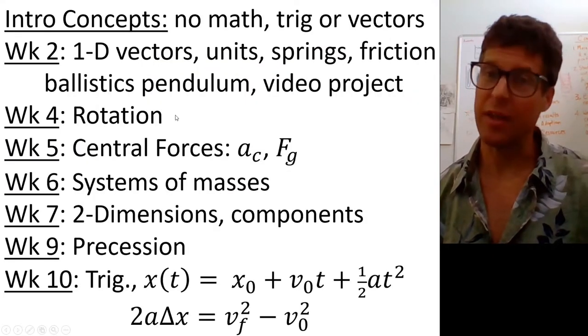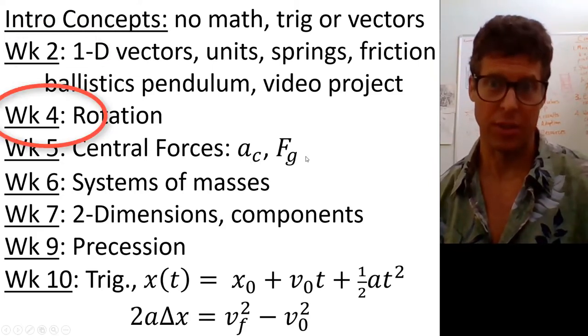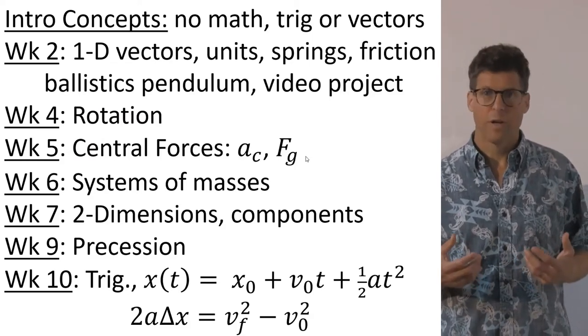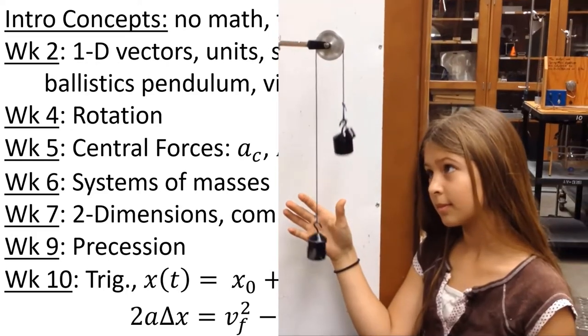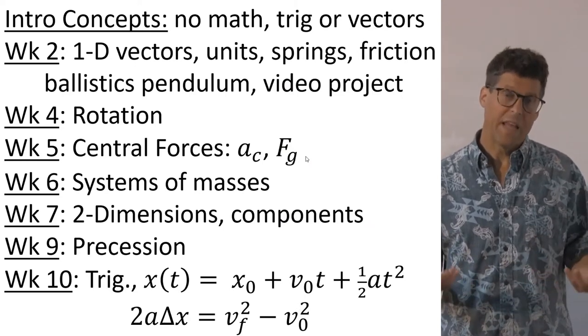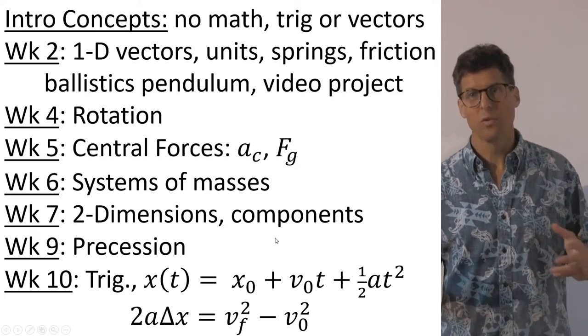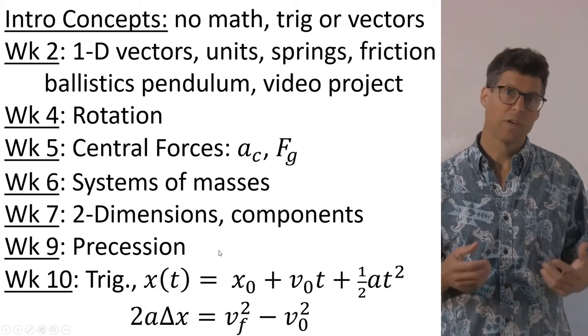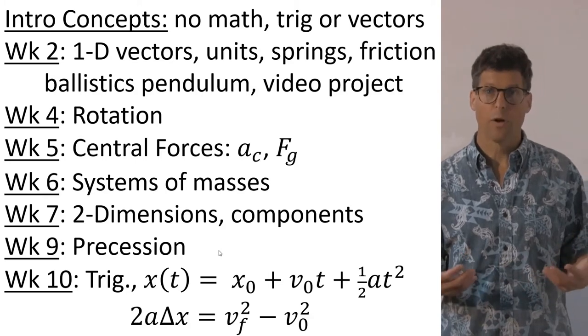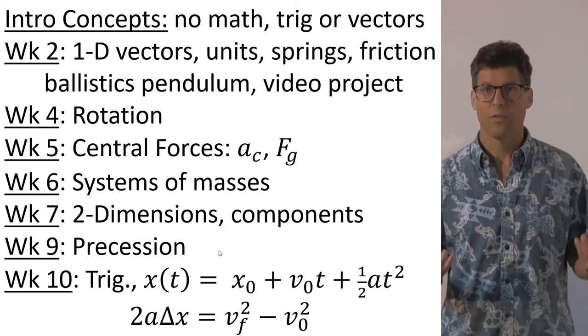After covering mechanics in one dimension in the first two weeks, we repeat the same process for rotations. And in week five, we look at central forces, including centripetal acceleration and universal gravity. In six, we can look at systems of masses. In week seven and eight, we repeat the analysis again, but for two dimensions, but without trigonometry, so students get an idea of how to visually estimate components. In week nine, we look at more advanced topics like precession and gyroscopic stabilization. And in week 10, we draw it all together and allow students to use trigonometry and to use these larger kinematic formulas.